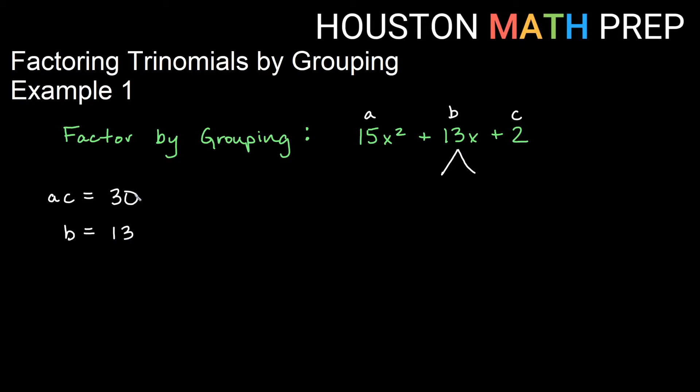When we compare a times c and b, we want to look at what two numbers will multiply to get a times c, and those same two numbers will add to get b. And if I can find two numbers that work for that, then this will factor by grouping.